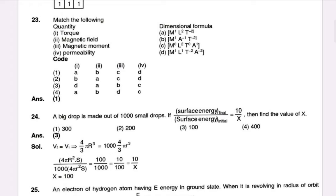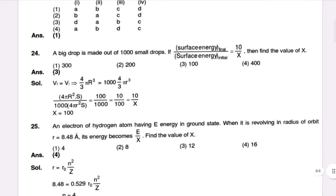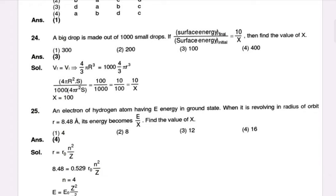These are the results for the percentage error in the value of the spring constant. The percentage error is calculated, giving the final value of x equal to 100 with v final equal to v initial.